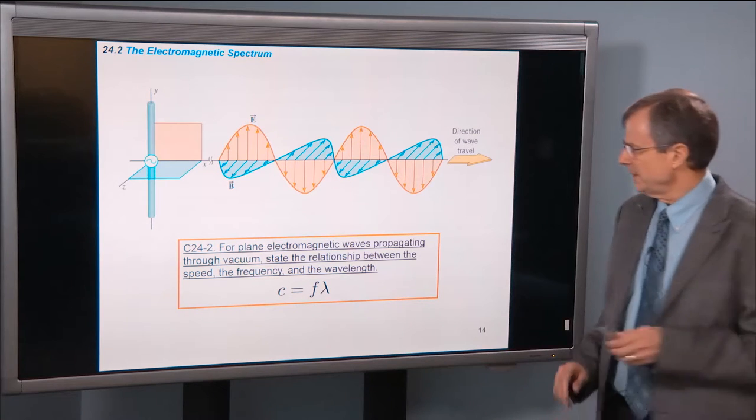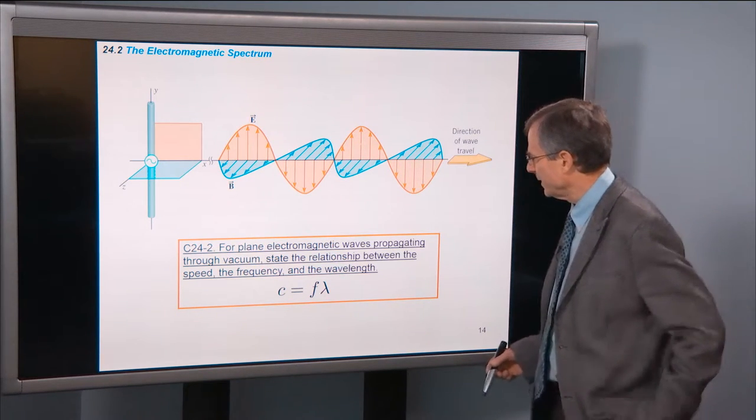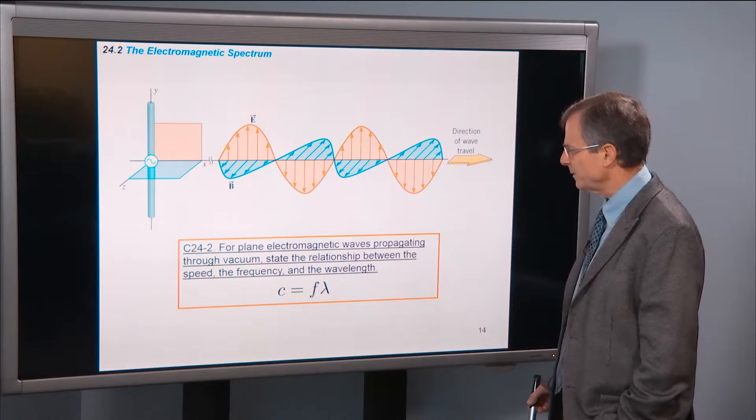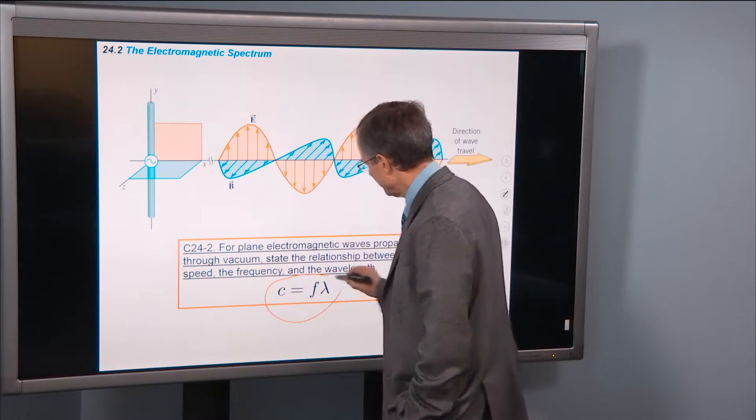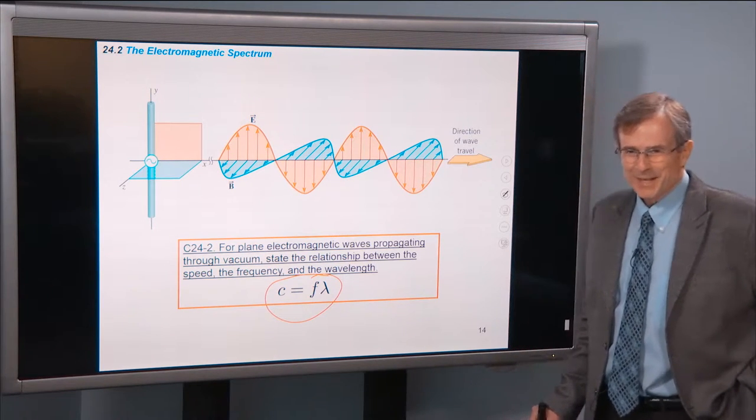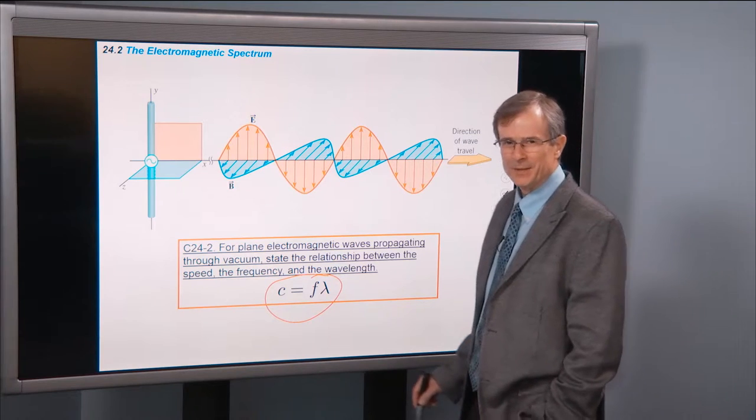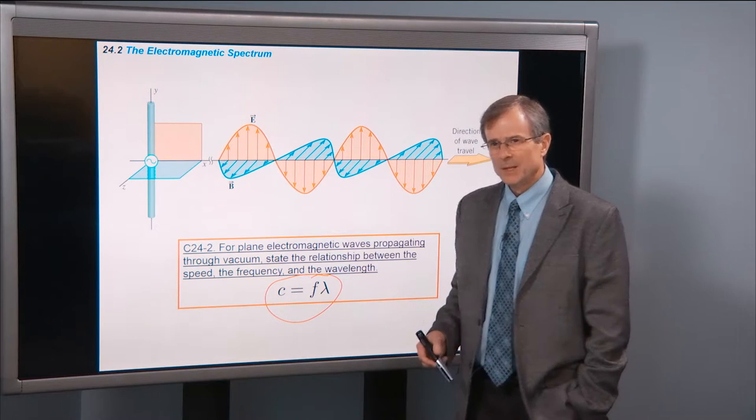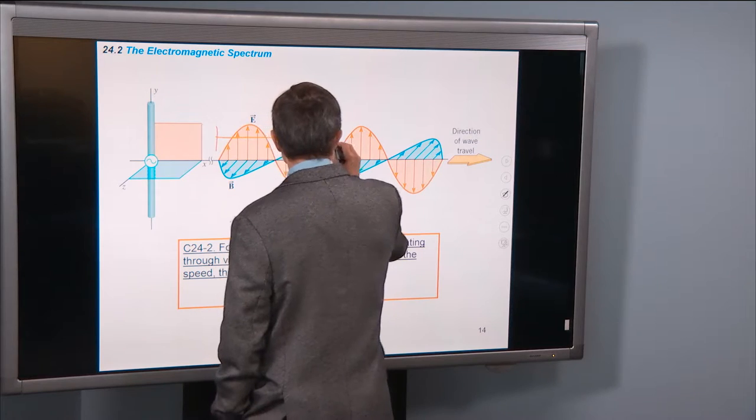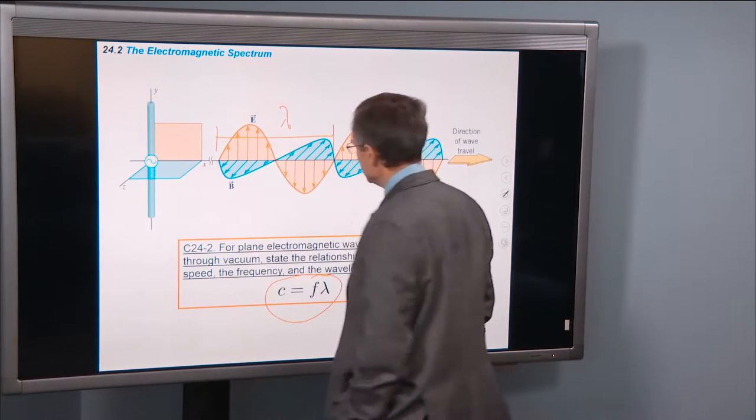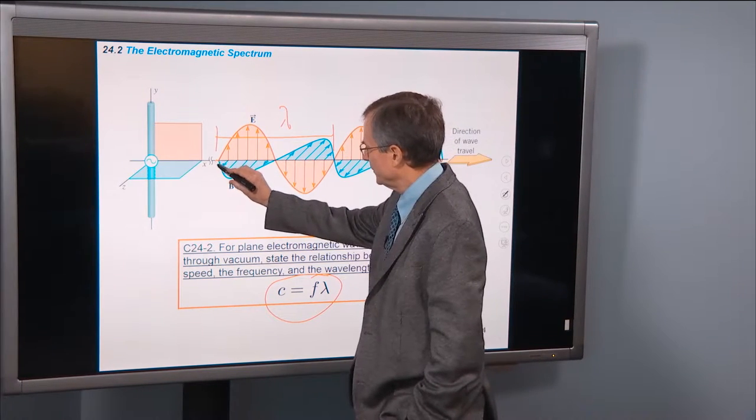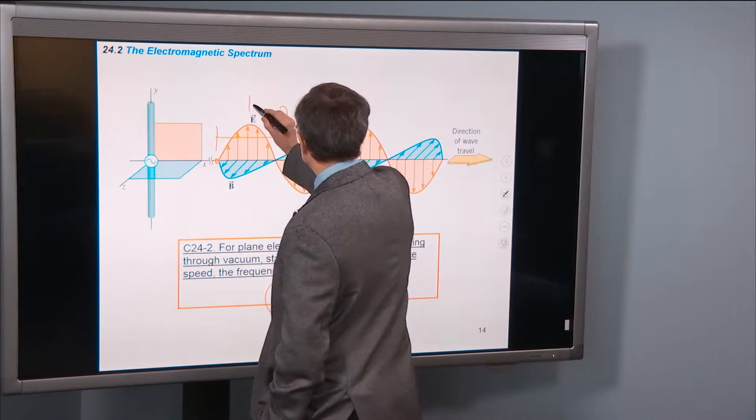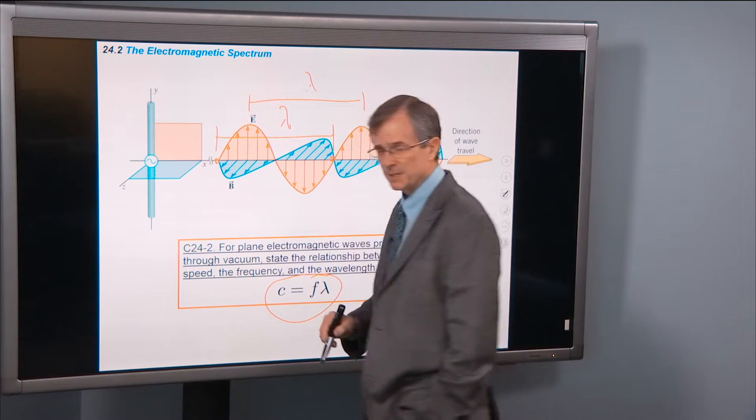First, for plain electromagnetic waves propagating through vacuum, state the relationship between the speed, the frequency, and the wavelength. This concept should not be very difficult. Back in chapter 17, we talked about the relationship between the speed of a wave, the frequency of a wave, and the wavelength. The wavelength is just what you think it would be. It's the distance between two similar places on the wave, two zero points like that, or two adjacent crests, like from here to here. Either way you get the same distance. That's the wavelength of the wave.